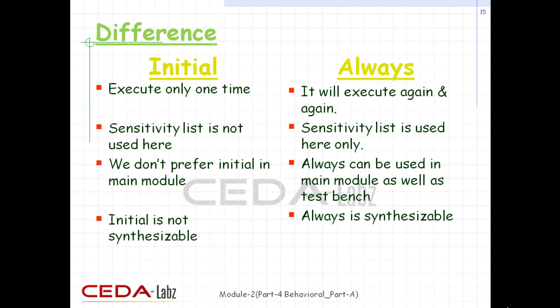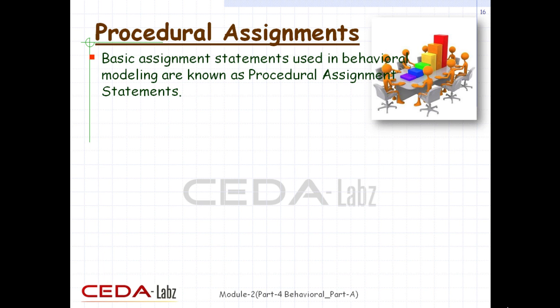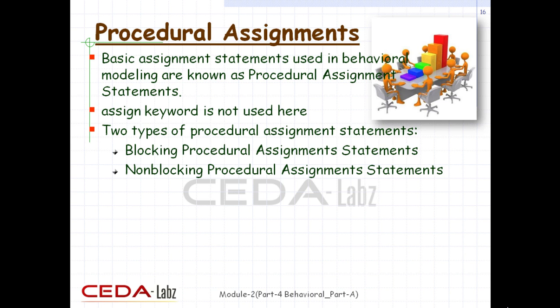Procedural assignments update values of reg, integer, real, or time variables. They are used to assign to only a register data type. The value placed on a variable will remain unchanged until another procedural assignment updates the variable with a different value. These are unlike continuous assignments discussed in dataflow modeling — the assign keyword is not used in this modeling. There are two types, which we will discuss in detail as we move further.